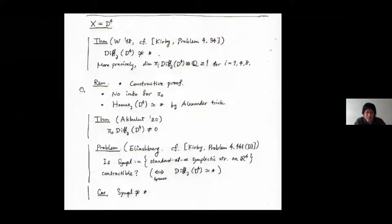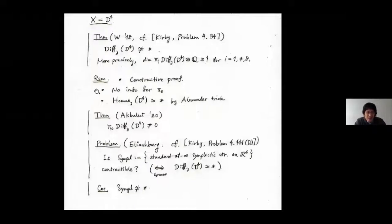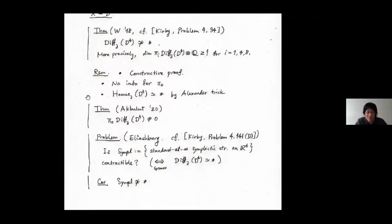The proof of our result is constructive. We explicitly constructed some elements in the rational homotopy groups using trivalent graphs. Our result gives no information for π0 of Diff(D4). Also, the group of homeomorphisms of D4 is contractible by the Alexander trick, so our result shows a difference between the homotopy types of Diff(D4) and Homeo(D4).